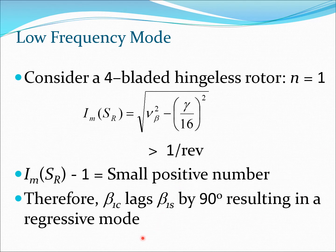It will become clear why we use the word regressive mode. Let us consider a four-bladed rotor again, so N is 1, but now the rotor is hingeless. Therefore the imaginary SR value is greater than 1 per rev. Remember it totally depends on this value of new beta here, and now the value of new beta may be something like 1.12 per rev. So we are going to get this value as now a small positive number. The situation is flipped from what it was previously, and therefore beta 1C lags beta 1S by 90 degrees resulting in a regressive mode.